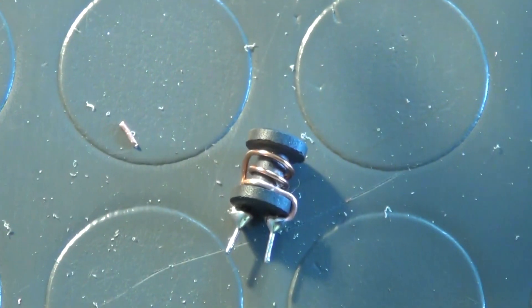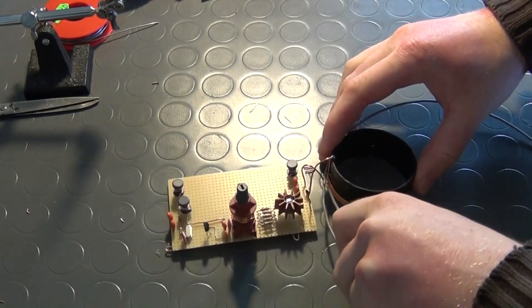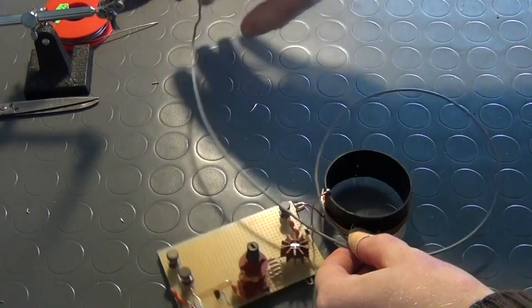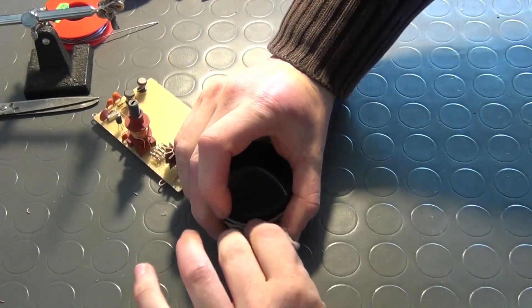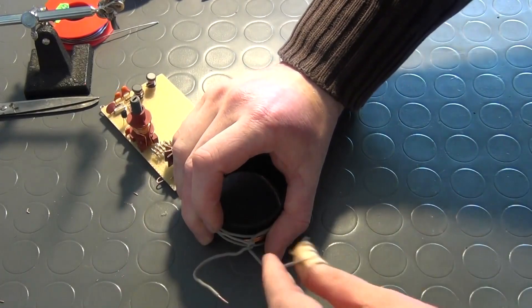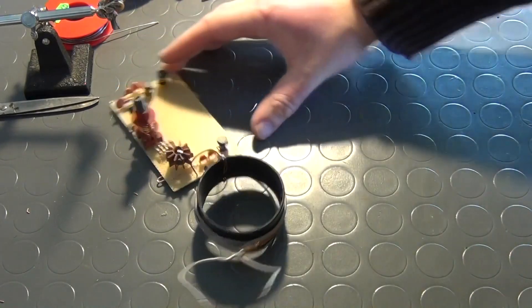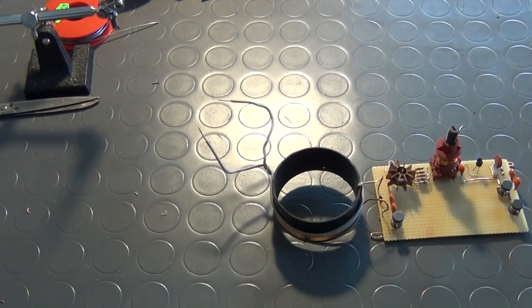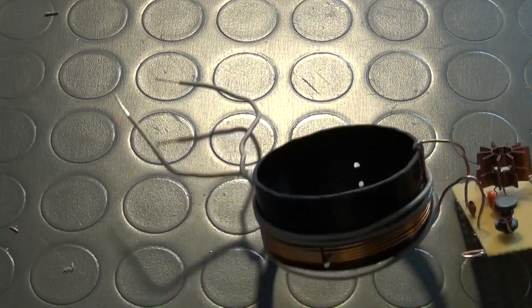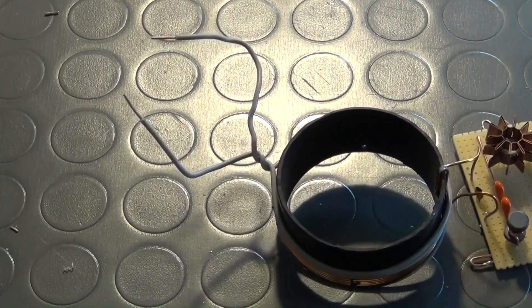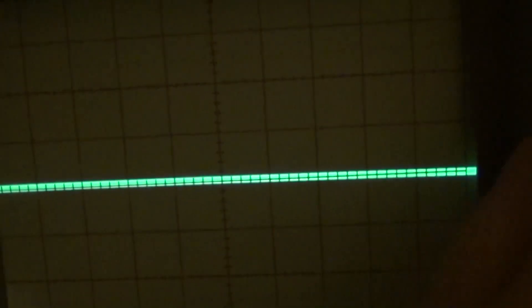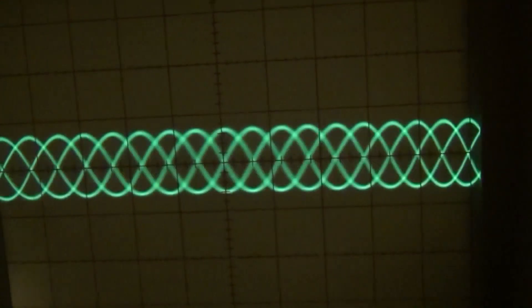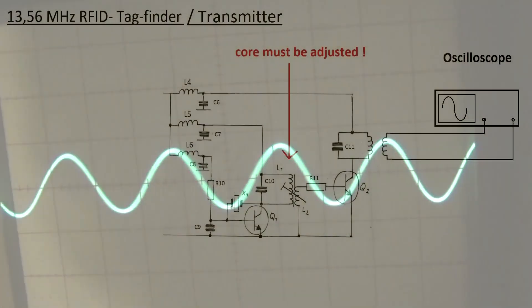After having installed all three LC filters according to the circuit diagram, I will now again measure the output of the amplifier stage. I do this by loosely winding two to three turns of insulated wire around the detector coil and attaching this wire to the oscilloscope. Now that the filters are installed, the magnetic field generated by the detector coil is oscillating in a much cleaner sinusoidal fashion.